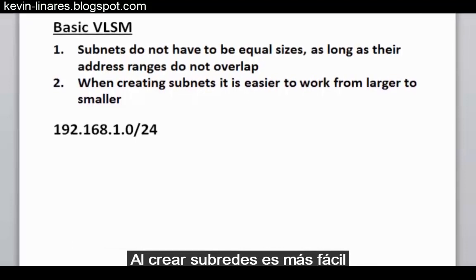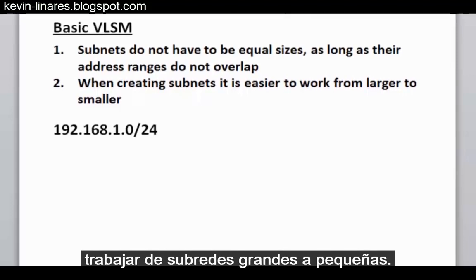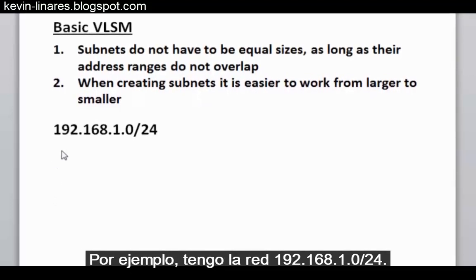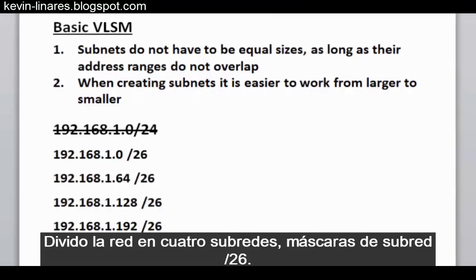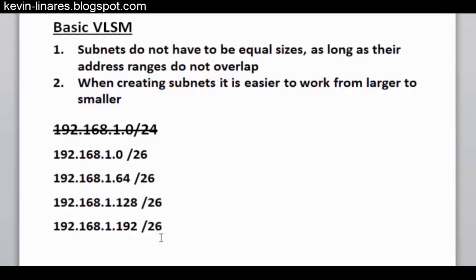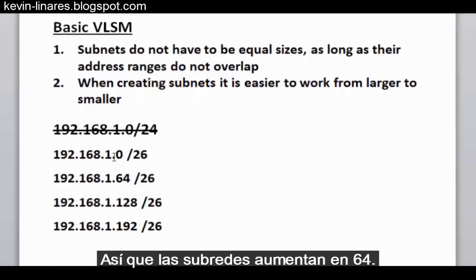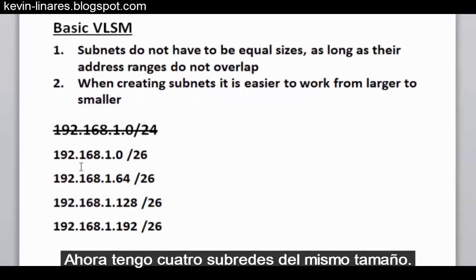Rule 2: When creating subnets, it is easier to work from larger to smaller subnets. For example, I have the 192.168.1.0/24 network. I subnet the network into 4 subnets with /26 subnet masks. The subnets go up by 64, so I now have 4 equal sized subnets.